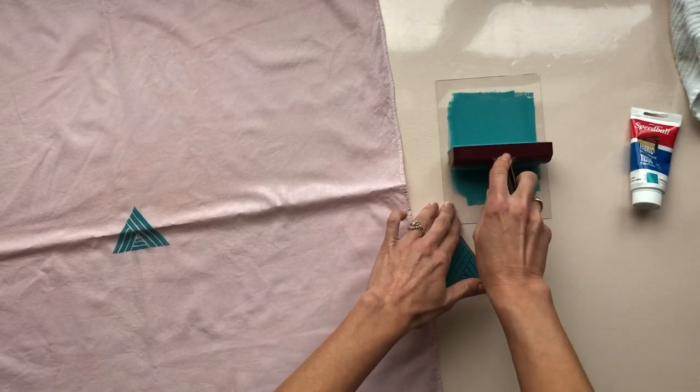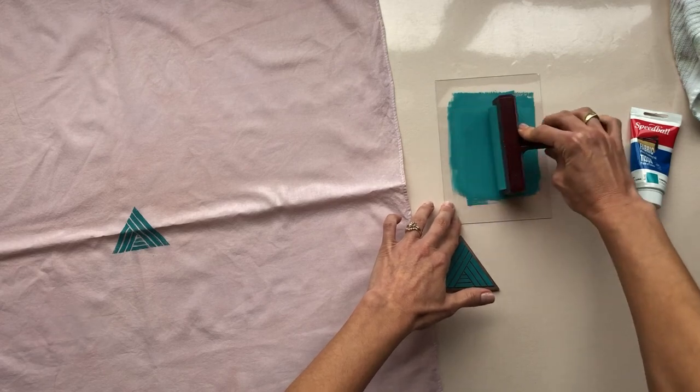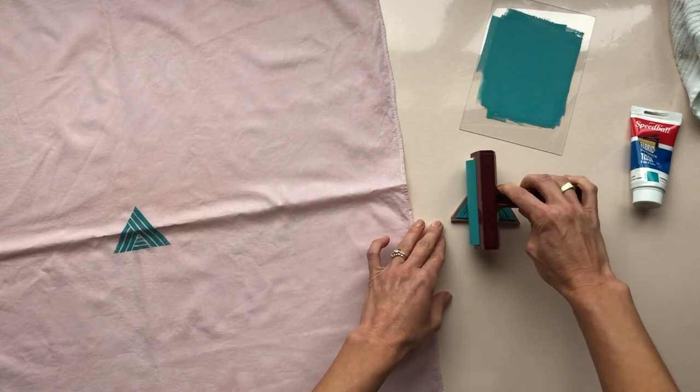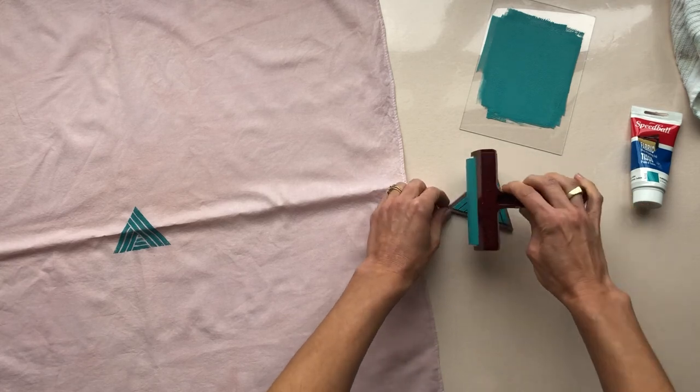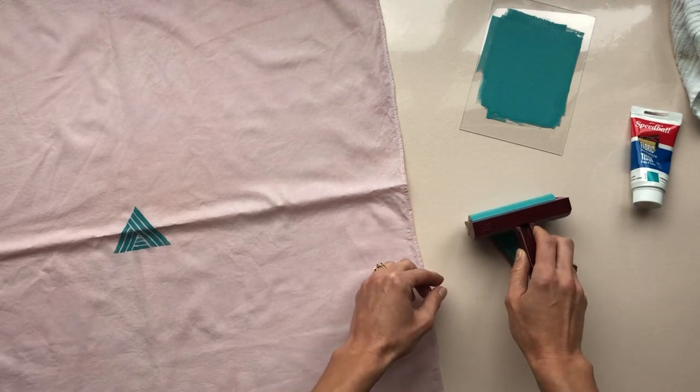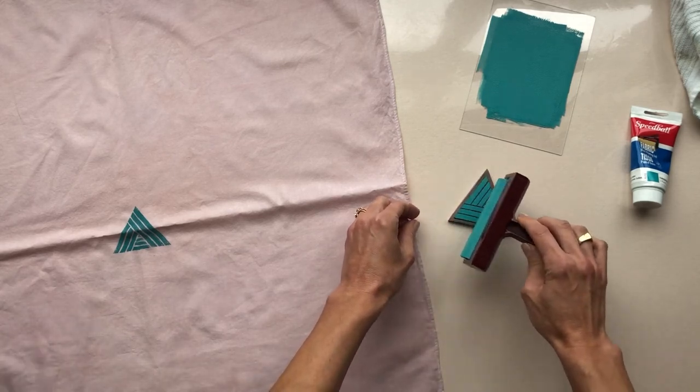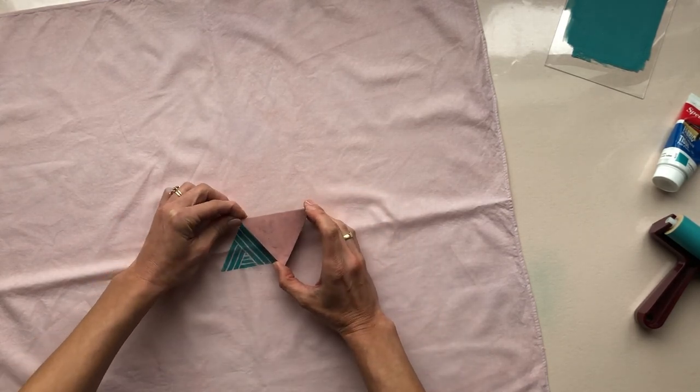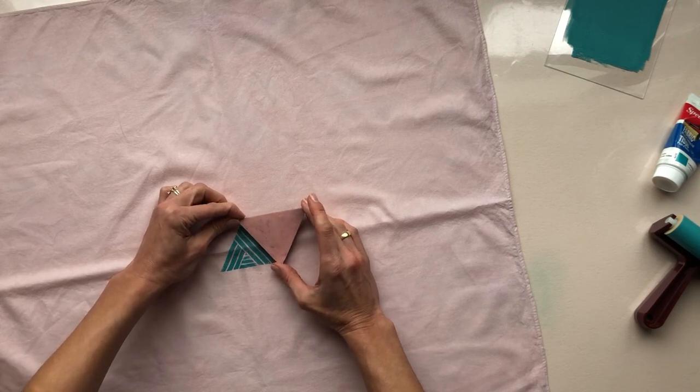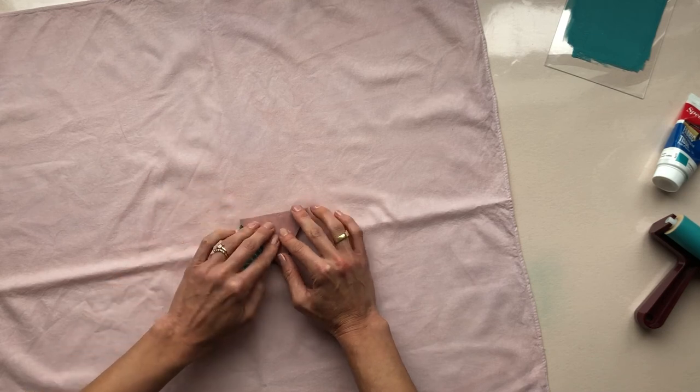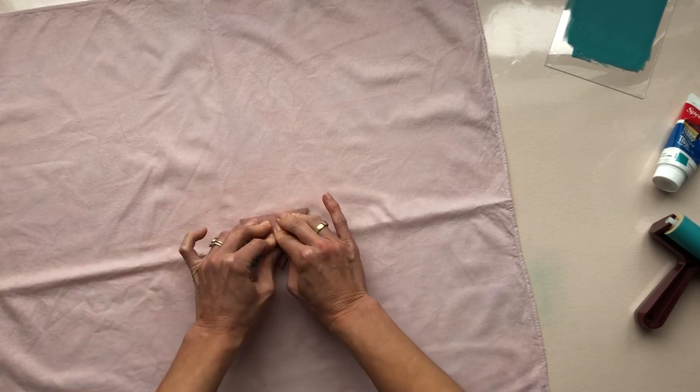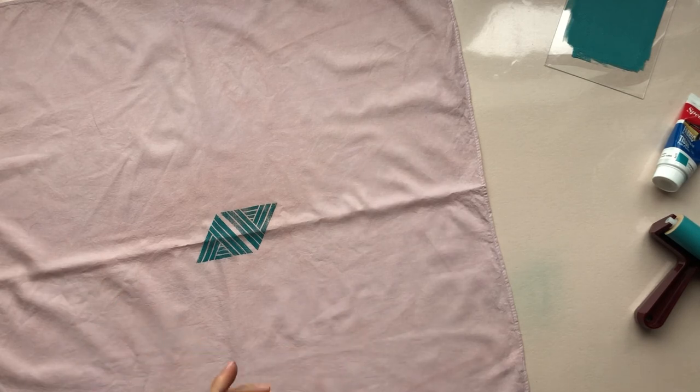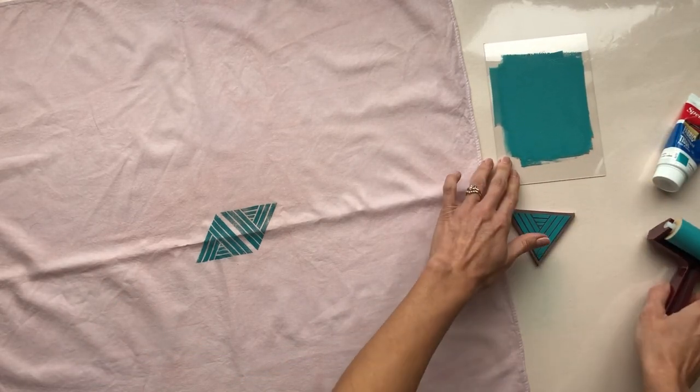I can usually get a few impressions out of this ink, but when you start to see the impression get a little bit fainter, then you can re-ink your plate and your brayer. All right. Now for lining up this next one, I'm just using the outline of my stamp to help guide me to kind of line it up with the first impression. And I'll keep going from here.